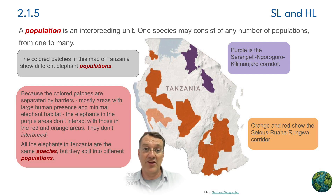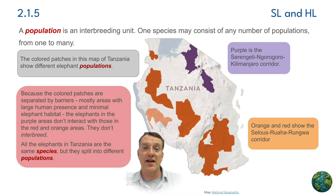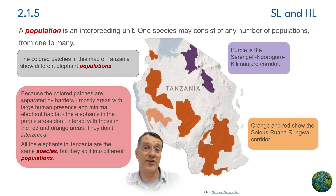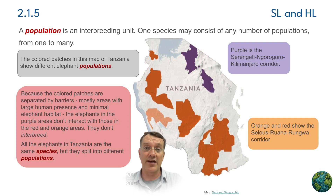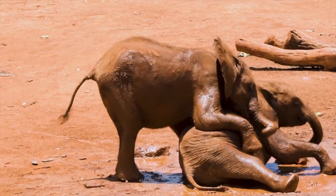Take this map of Tanzania for example. In the top part of this map, we have elephants in the Ngoro Serengeti area, and in the bottom part of the map in the reddish-orange areas, we see elephant populations in the Roaha area. The elephants in the purple areas in the northern part of Tanzania can interact with one another.